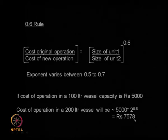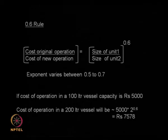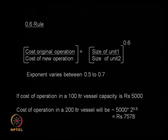The result is 7578 rupees. So if operating a 100 litre vessel costs 5000 rupees and you want to operate a similar 200 litre vessel, the cost will not be 10,000 rupees but 2 raised to the power 0.6 times 5000, which is 7578 rupees. This 0.6 rule is very useful. Depending upon the type of equipment, the exponent may change — for a very complicated equipment it may be 0.7, and for a simpler one it may be 0.5.